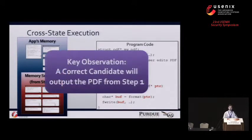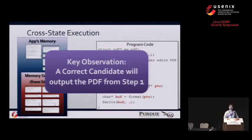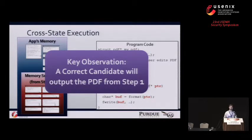The key observation here is that a correct candidate for that P entry point should recreate the PDF we saw in step one. It's also important to note that the input supplied to step two should obviously be different from the input used in step one. This is to easily differentiate between output generated from the new application data structures versus the ones frozen in that memory snapshot.